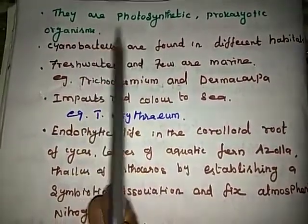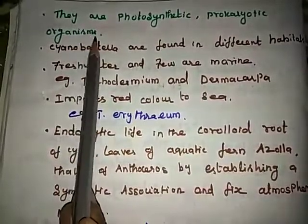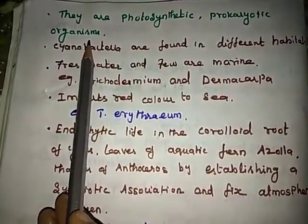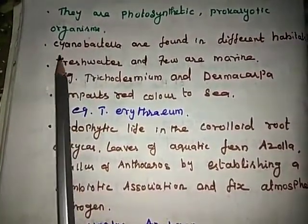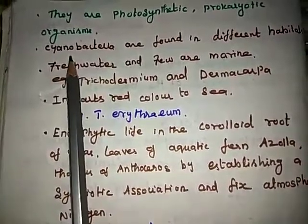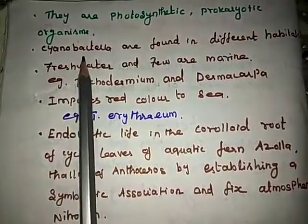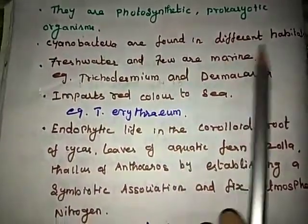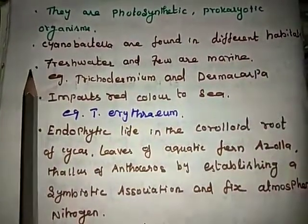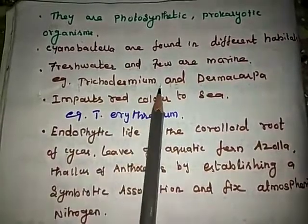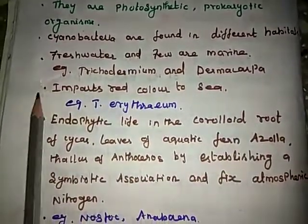They are photosynthetic prokaryotic organisms. According to the evolutionary record, Cyanobacteria are primitive forms found in different habitats. Most inhabit freshwater and a few are marine — for example, Trichodesmium and Thermocarpate.